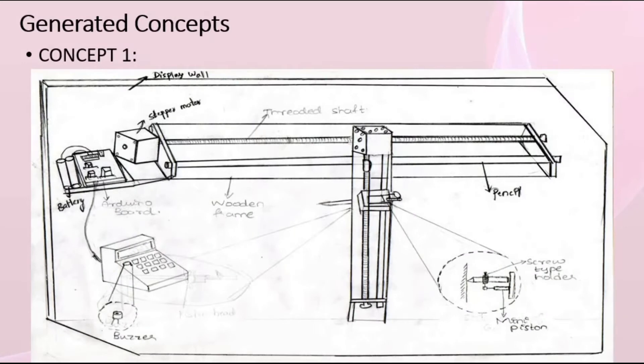This slide is about the generated concept. Concept one is mainly about the red shaft drawing board. It mainly consists of buzzer, battery, Arduino board, wooden frame, stepper motor, pencil, mini piston attached to screw type holder. And this mainly works through the red shaft.